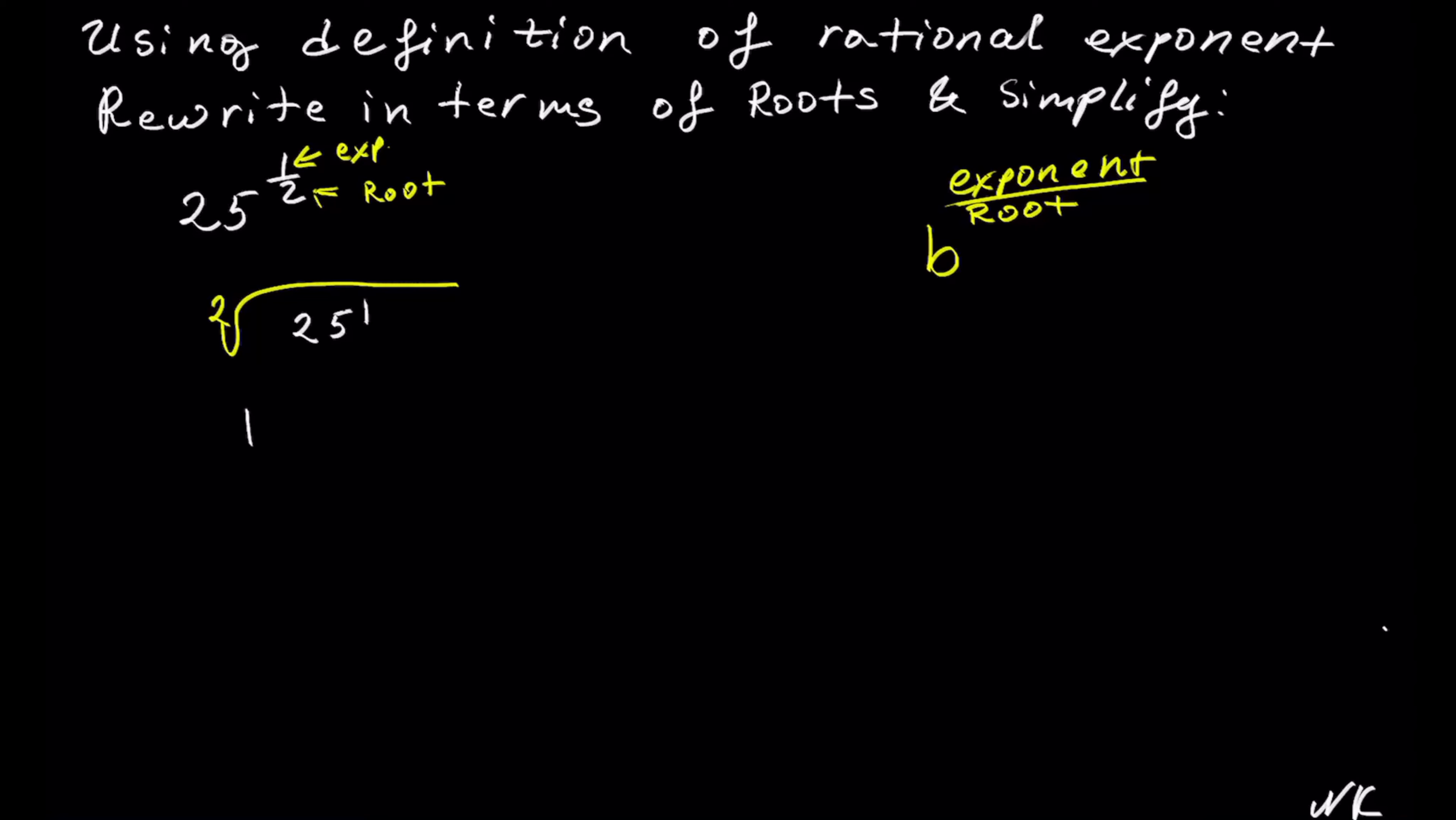This is a square root of 25, and in order to simplify this we can rewrite 25 as 5 to the second. So we get square root of 5 to the second. Square root and the second power will cancel, and we get 5 as our solution.